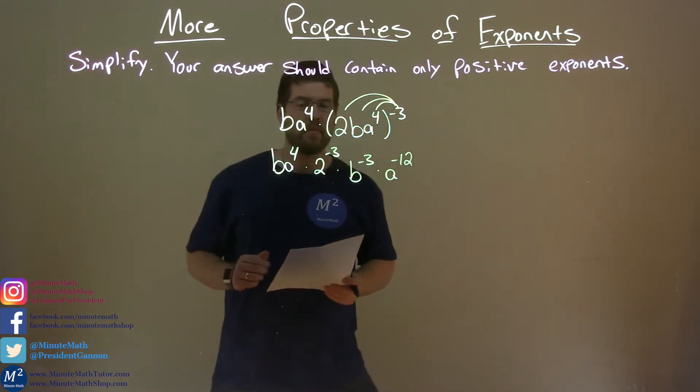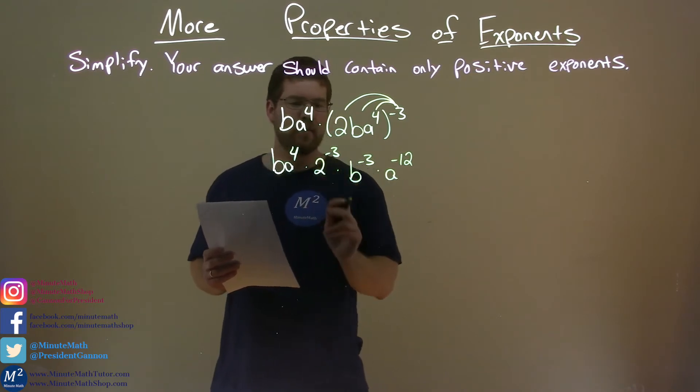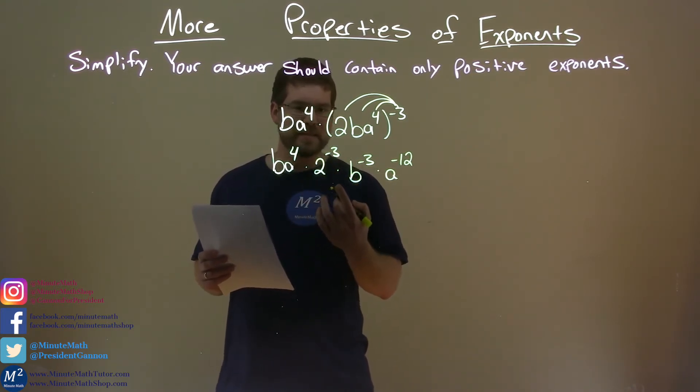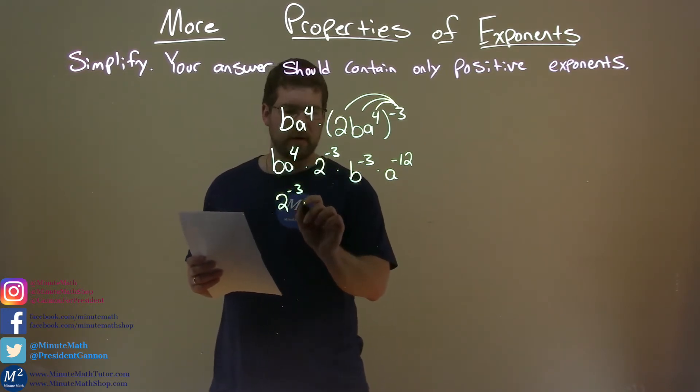Now we want to combine our like terms. Well, 2 to the negative third power is by itself. Let's put it up front here. 2 to the negative third power. Let's write that first.